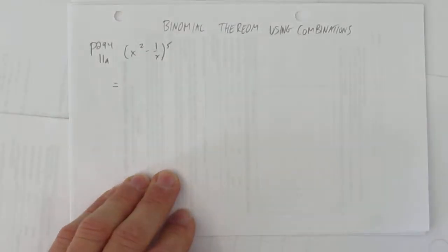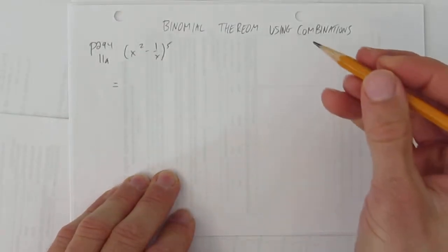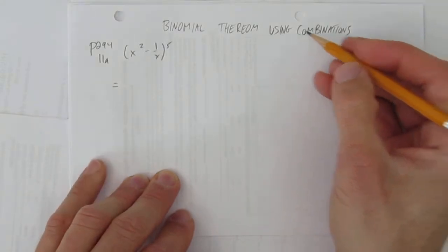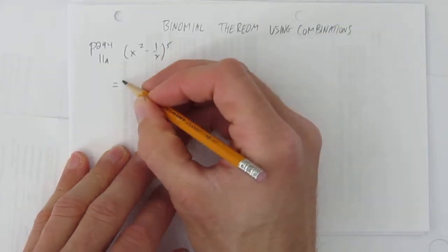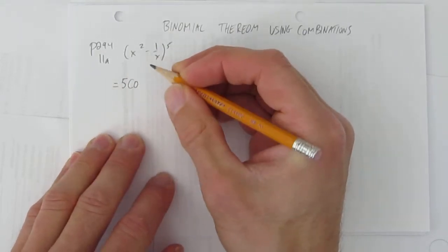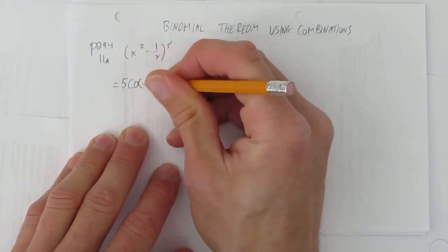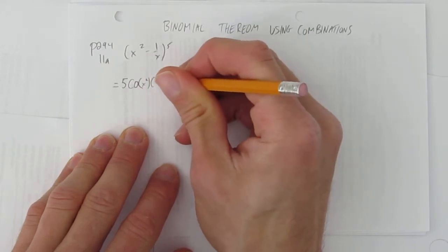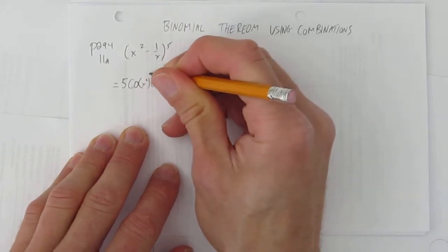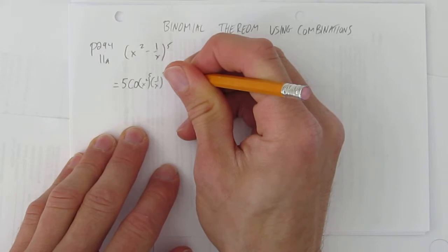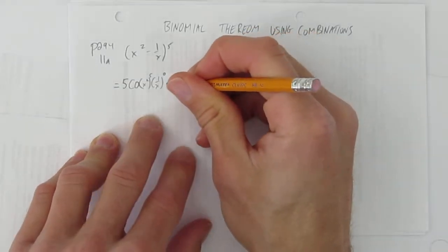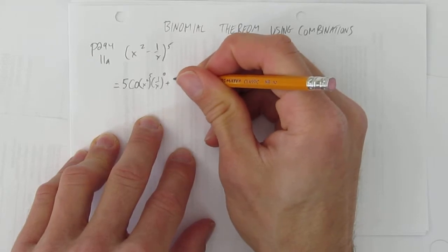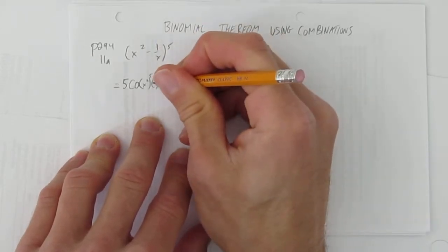When you're using binomial theorem and you're doing combination style binomial theorem, we look at the exponent and we write five choose zero, and then the first thing in the brackets and the second thing in the brackets. The first thing is going to be to the power of five and the second thing to the power of zero. That's the pattern. Watch the pattern as they keep going. Oh, I forgot the negative here — that's really important, better keep that in there. There's a negative.